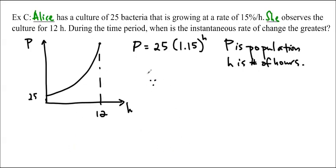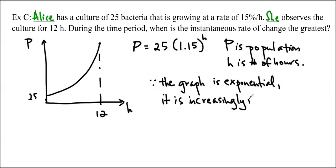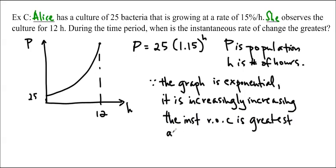So we don't actually need to find the instantaneous rate of change to prove it. You can just explain it. So I'm going to say since, and this is the symbol for since, the graph is exponential. It is increasingly increasing, and the instantaneous rate of change is greatest at the endpoint when H is equal to 12. And that's it. We could find the instantaneous rate of change for that, but this is a sufficiently mathematical explanation.